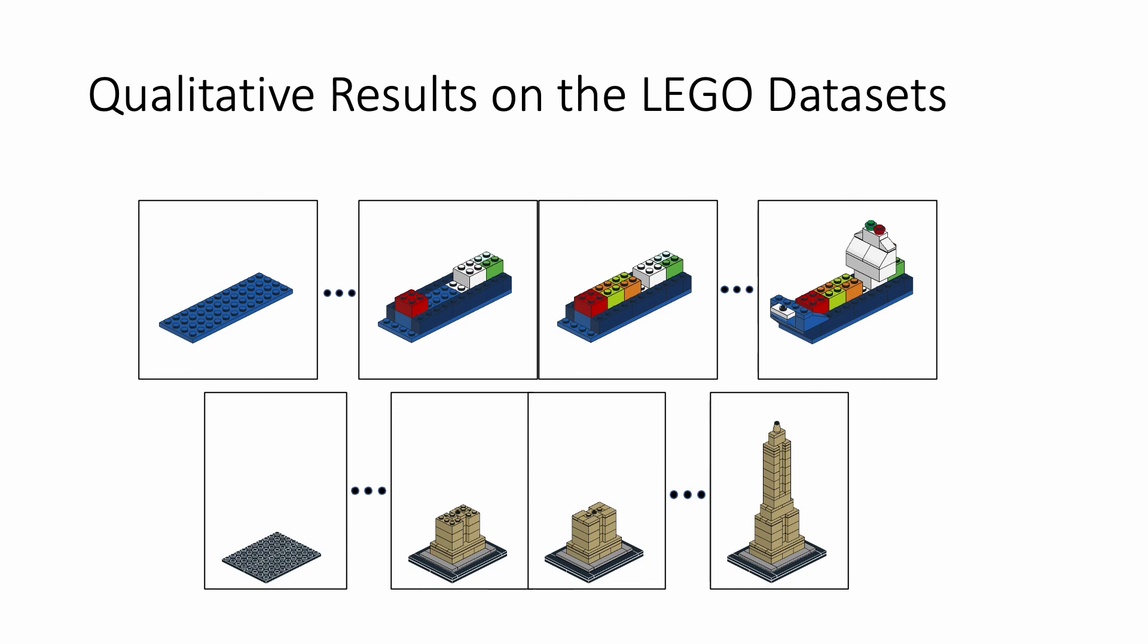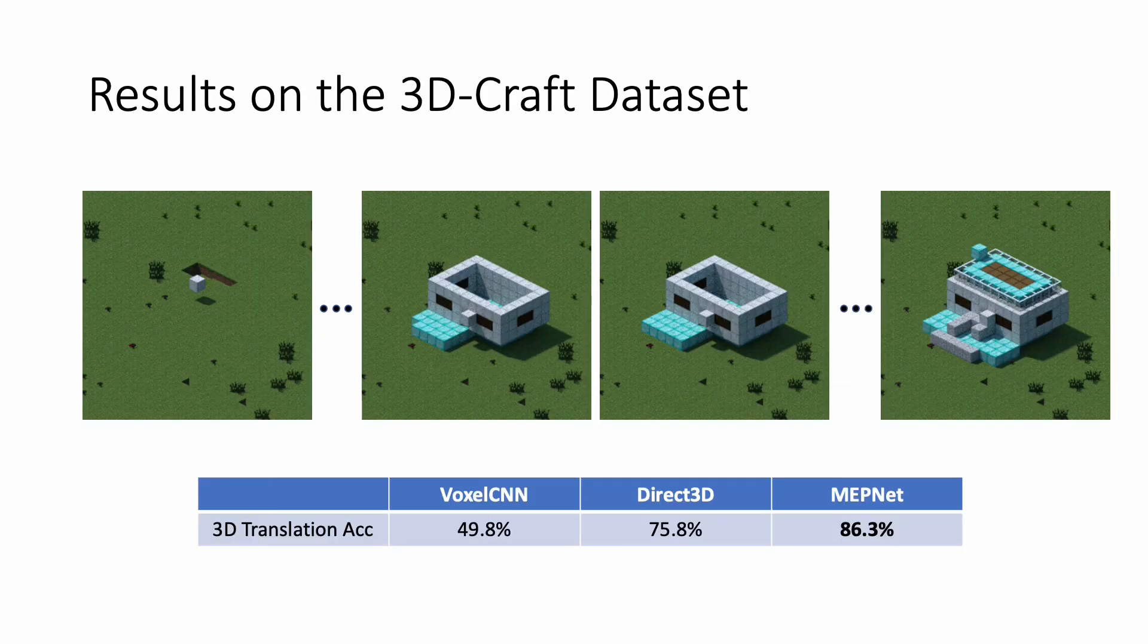We also show that MEPNet can successfully build objects from scratch with diverse shapes guided by manuals. We also evaluate our model on a Minecraft house dataset, where in each step, we will add a single primitive brick to build a house. MEPNet again outperforms baseline models.